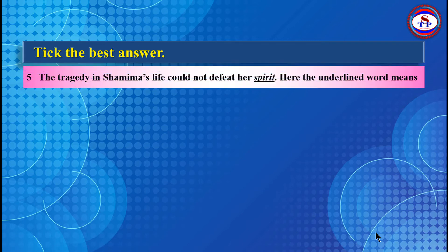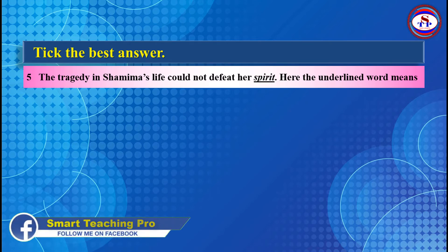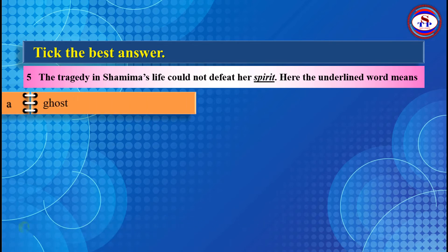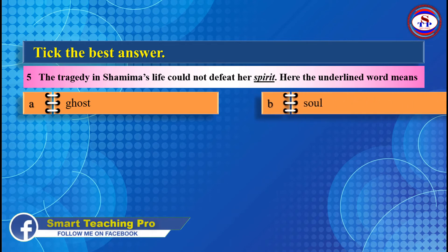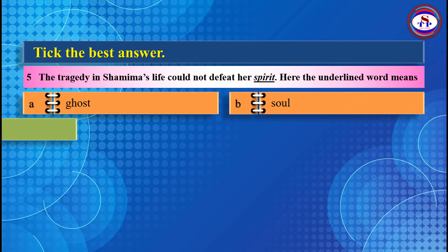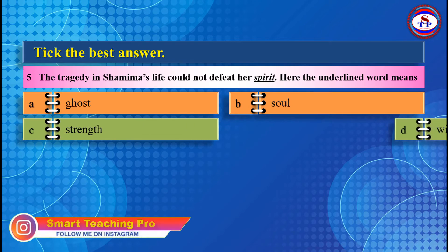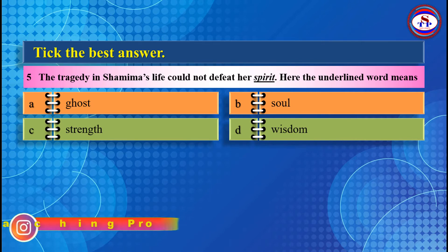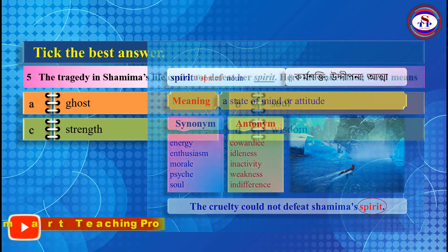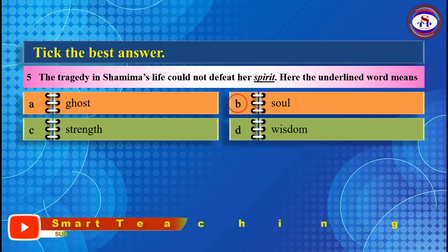Number 5: The tragedy in Shamima's life could not defeat her spirit. The underlined word 'spirit' means — Option A: Ghost, Option B: Soul, Option C: Strength, Option D: Wisdom. The best answer is Option B: Soul.